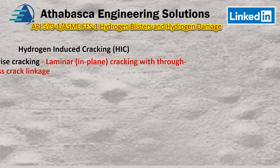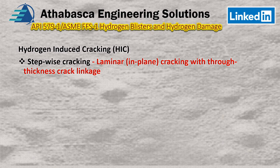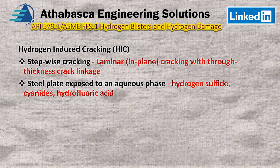Notes with regards to hydrogen cracking: as seen earlier, it's been nicknamed stepwise cracking — laminar in-plane cracking with through-thickness cracking that is really created when the cracks link together. That's the most difficult one to predict because it's hard to characterize by inspection. The steel plate is exposed to an aqueous solution — characteristic environments include hydrogen sulfide, very common in refinery applications, cyanides, and hydrofluoric acid, which is one of the older processes that can also create hydrogen-induced cracking.